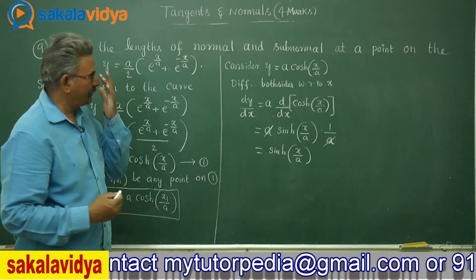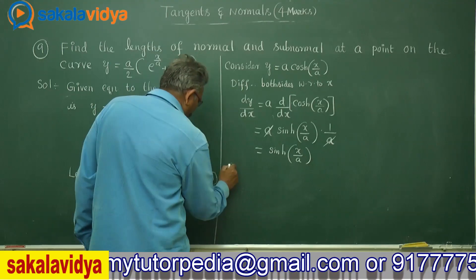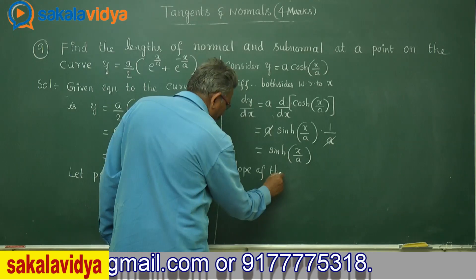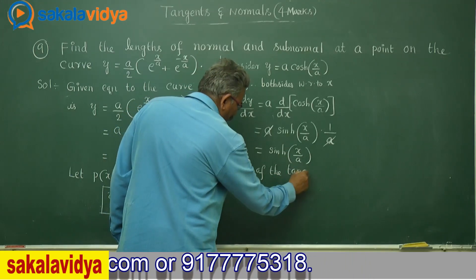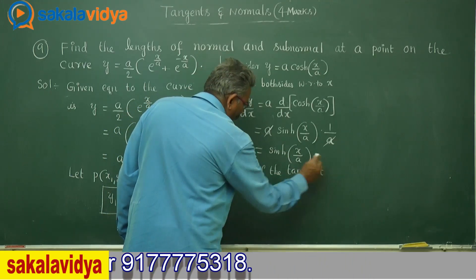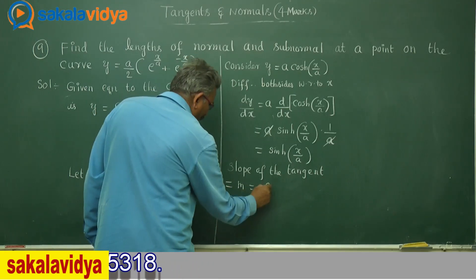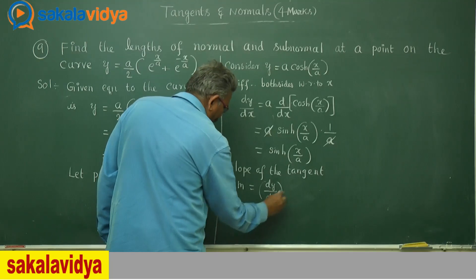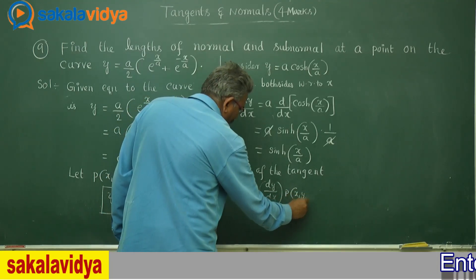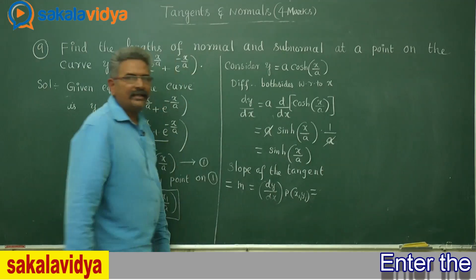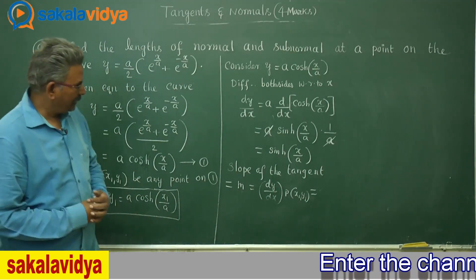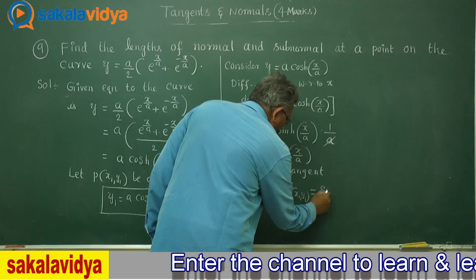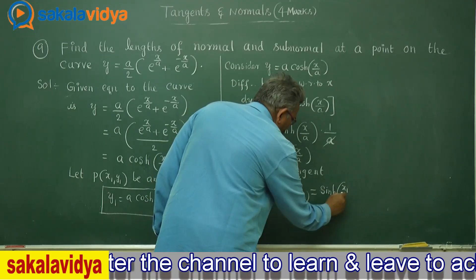Now let us find the slope of the tangent. Slope of the tangent equals m = dy/dx evaluated at P(x₁, y₁). Here x is replaced by x₁, so we get the slope in terms of the hyperbolic sine function only: m = sinh(x₁/a).